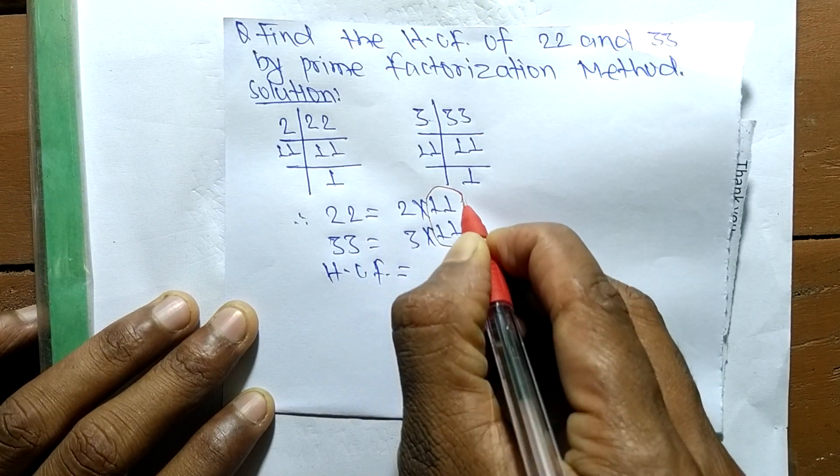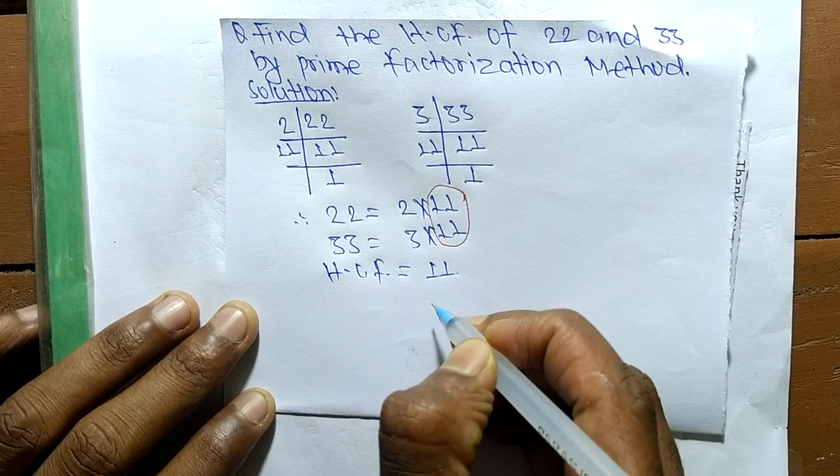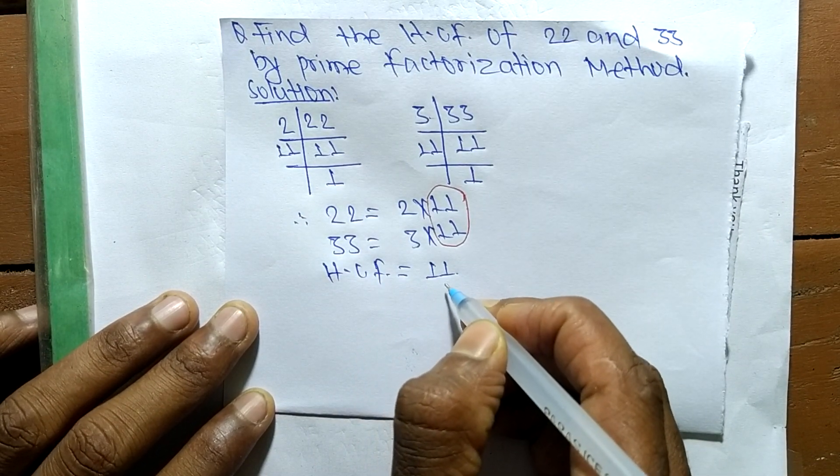So the first common factor here is 11 only, so HCF is equal to 11. So 11 is the highest common factor of 22 and 33.